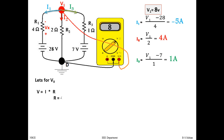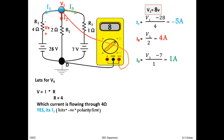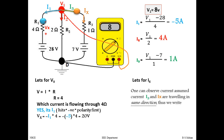Now let's solve for VX, which is the voltage across the 4Ω resistor. By Ohm's law, V = I·R, so the current through 4Ω is I1. However, I1 hits the negative polarity of VX first, so the correct equation is VX = −I1 × 4. With I1 = −5A, VX = −(−5) × 4 = +20V. Connecting a voltmeter with positive at the bottom and negative at the top of the 4Ω gives a reading of 20V.